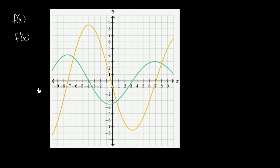Let's think about what would be the situation if the green function were f of x. If the green function were f of x, does the orange function here — the yellow function — could that be f prime of x? So let's think about what's happening to this green function at different points. This green function right over here, if we start at the left, has a positive slope.